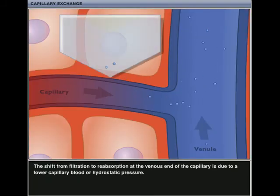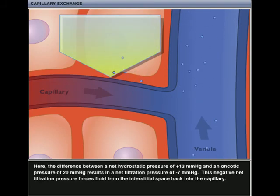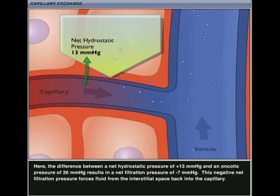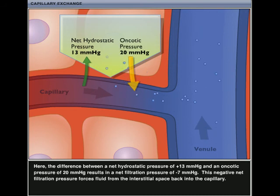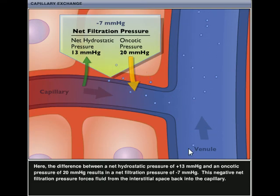The shift from filtration to re-absorption at the venous end of the capillary is due to a lower capillary blood or hydrostatic pressure. Here, the difference between a net hydrostatic pressure of 13 mmHg and an oncotic pressure of 20 mmHg results in a net filtration pressure of negative 7 mmHg. This negative net filtration pressure forces fluid from the interstitial space back into the capillary.